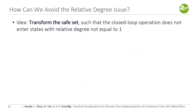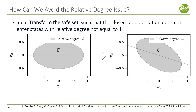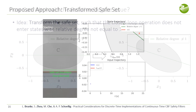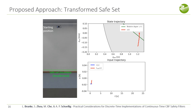Another method to prevent the presented issue is by transforming the safe set such that the closed loop operation does not enter states with relative degree that are not equal to one. Taking a CBF safe set and simply rotating it can also transform the set of states where the relative degree is not equal to one. As you can see, the CBF safe set has been transformed and the safe set boundary has shifted. Once the system reaches the boundary of the safe set, the system is far away from states where the relative degree is not equal to one, and the system can be kept inside the safe set as desired.